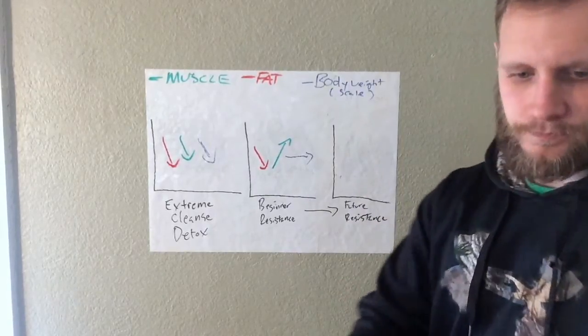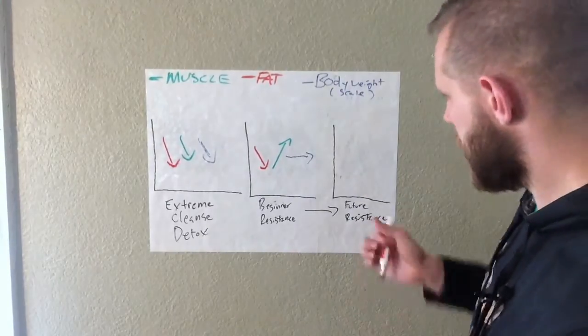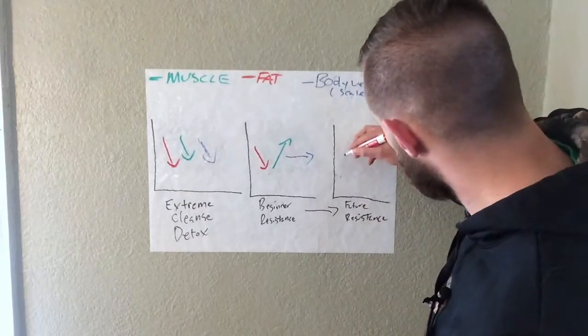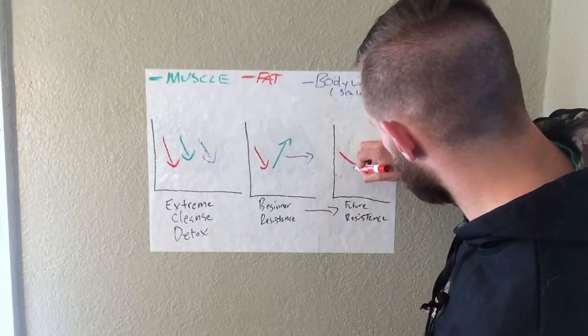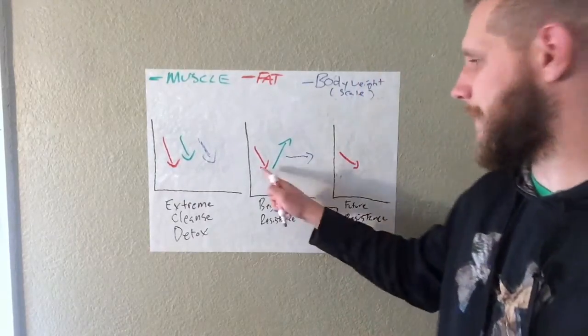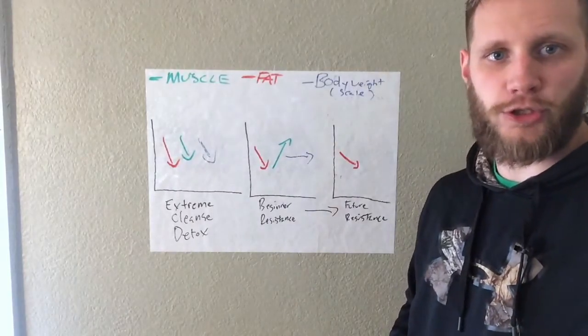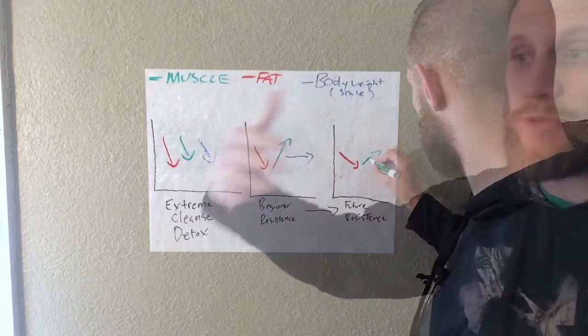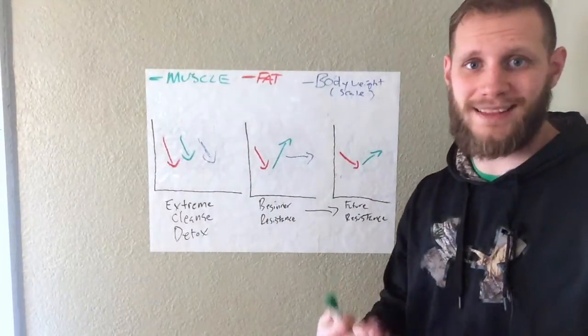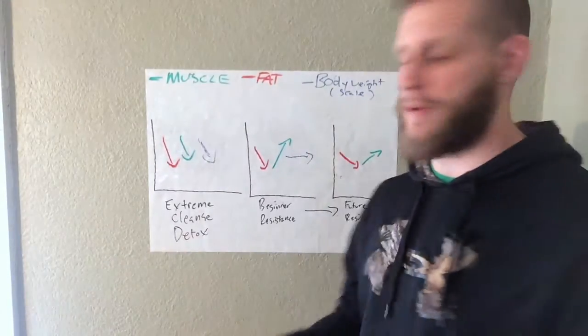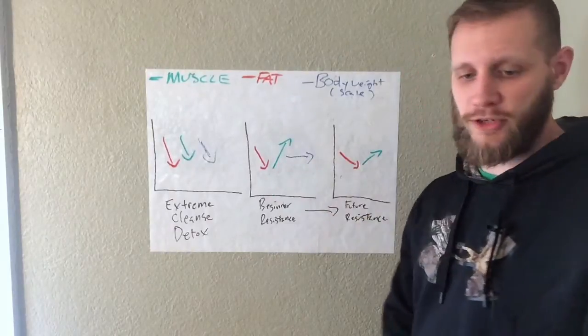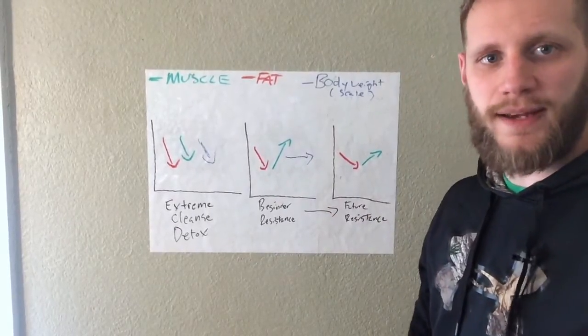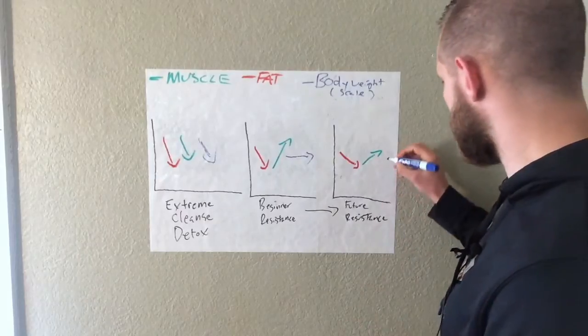So what happens down the road? Well, fat loss, you may lose it. It may flatten out a little bit. It may not be as steep as earlier. Your lean tissue, it should continue to gain. You should still continue to add lean tissue. It just won't be at a rapid rate like it was here, too. So what does that mean for body weight now? Down the road. This is down the road. What happens here?